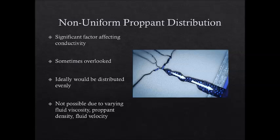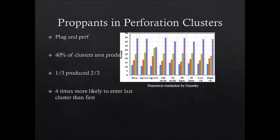A major factor that affects the conductivity of a fracture is the distribution of proppants. Ideally, fracking fluid distributes proppants uniformly in the fractured shale, but usually proppants are unevenly distributed due to variables such as fluid viscosity, proppant density, and fluid velocity. The plug and perf operation method is widely applied in hydraulic fracturing jobs, but achieving uniform distribution in perforation clusters presents a challenge. Studies show that about 40% of perforation clusters were not contributing to shale gas recovery, and one-third of clusters contribute to about two-thirds of total gas production, based on production logs from more than 100 horizontal shale wells from six shale basins.